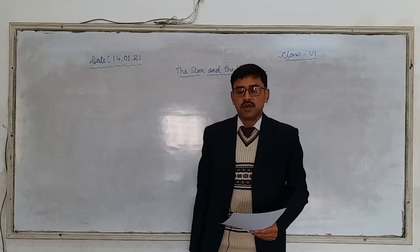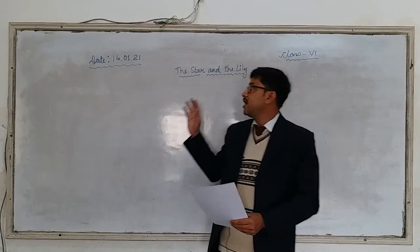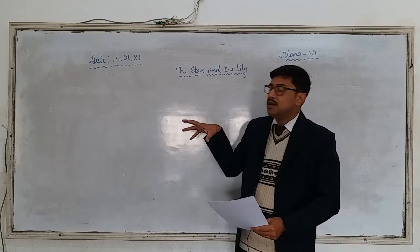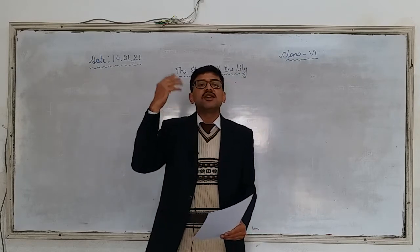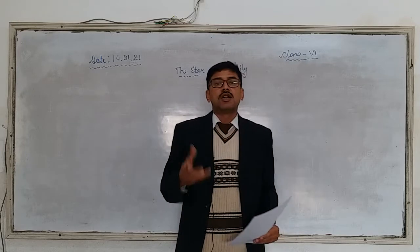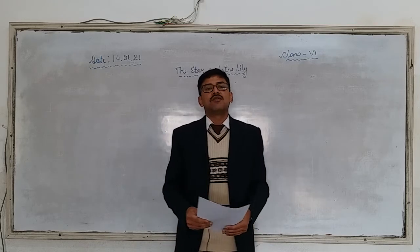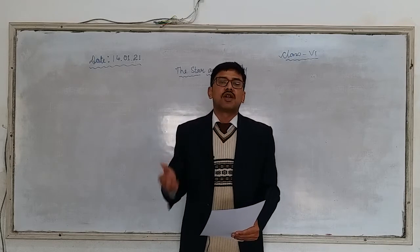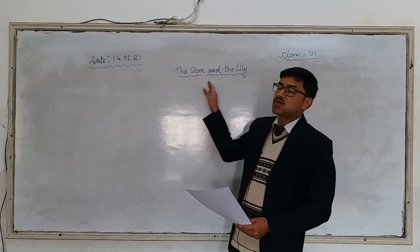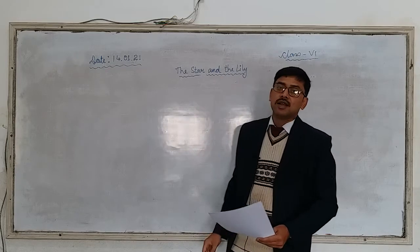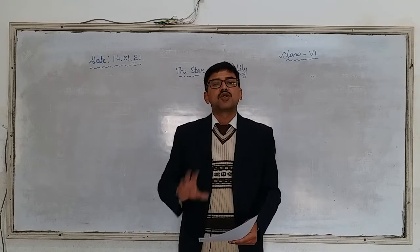We are into one more new chapter from our English literature book, and the name of the chapter is 'The Star and the Lily.' From the name, if you think deeply, the star and the lily have some similarity — an imaginative similarity. We are in the section of wonder tales, which means wonder stories where in reality that does not happen, like we learned in the story of Rip Van Winkle.